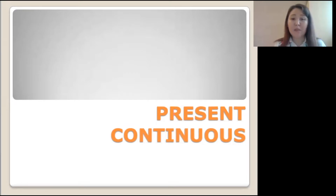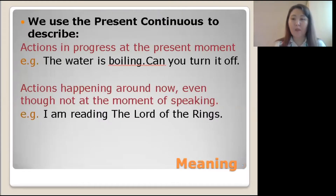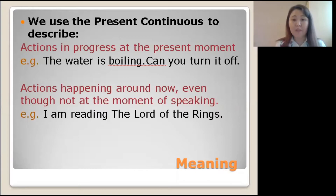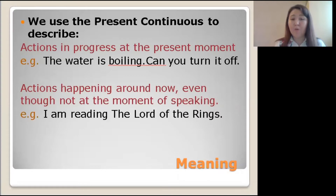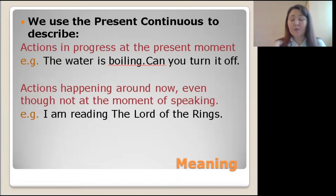Let's start with the meaning of the Present Continuous. We use the Present Continuous to describe actions in progress at the present moment, and to describe actions happening around now, even though not at the moment of speaking. Here are examples: 'The water is boiling — can you turn it off?' and 'I am reading the Lord of the Rings.'